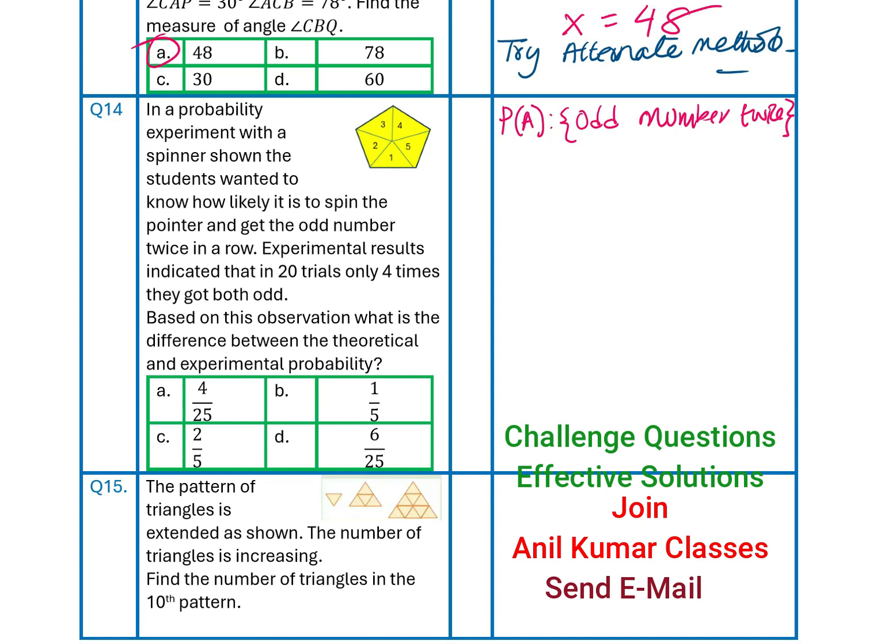Now, experimental results indicate that in 20 trials, only 4 times, they got both odd numbers. So, 4 out of 20 is experimental probability. So, that is what it means. Experimental results indicate that in 20 times, only 4 times, they got both. Okay. Now, continue.